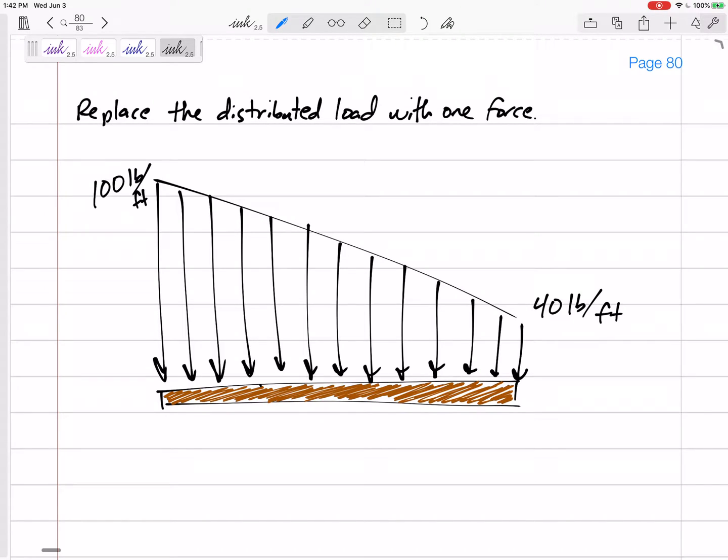All right, what if we have a distributed load like this that's not uniform, and it's also not triangular, so it doesn't go to zero. It goes from one magnitude here to another magnitude here.